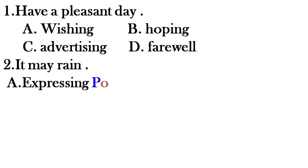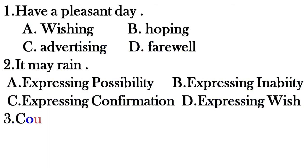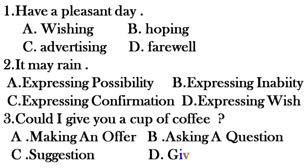Question number one: 'Have a pleasant day.' Four options are given — A: wishing, B: hoping, C: advertising, D: refusal. Question number two: 'It may rain here.' Options: A: expressing possibility, B: expressing inability, C: expressing confirmation, D: expressing wish. Question number three: 'Could I give you a cup of coffee?' Options: A: making an offer, B: asking a question, C: suggestion, D: giving permission.